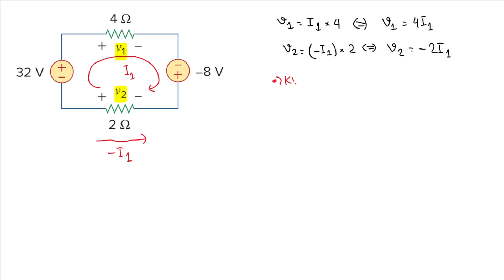Now let's do KVL at loop i1. KVL states that the sum of voltages in a loop equals zero. We have four components here, so let's start from the 32-volt voltage source.